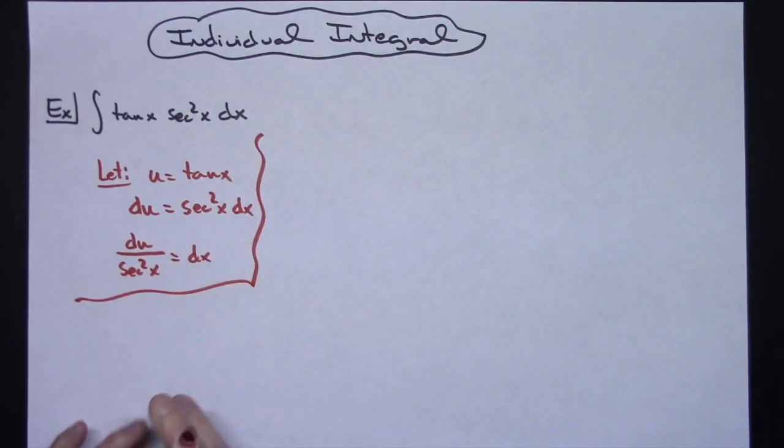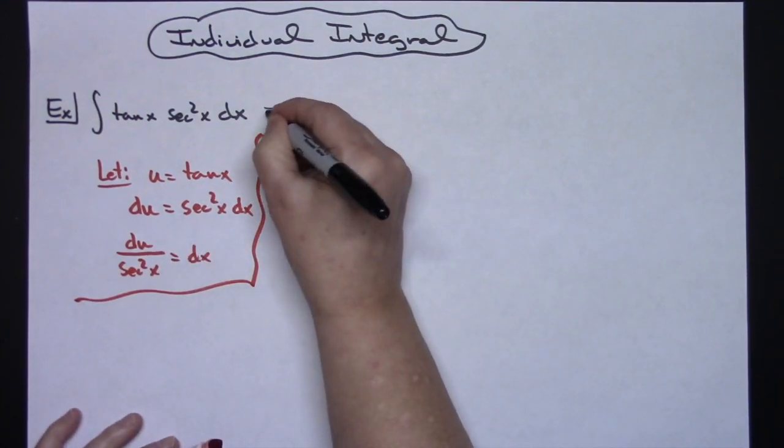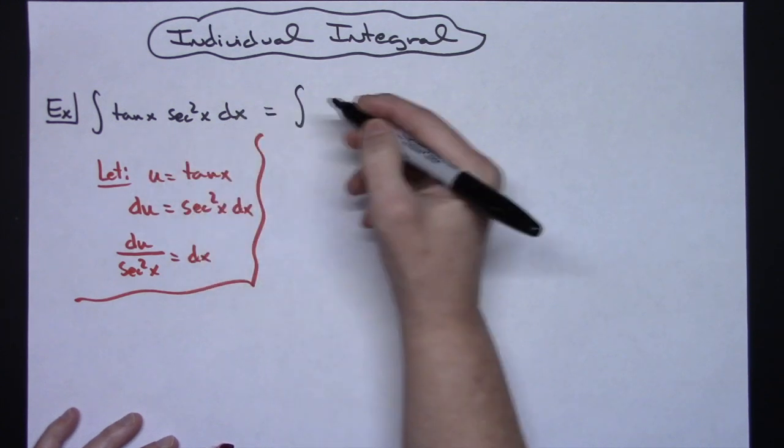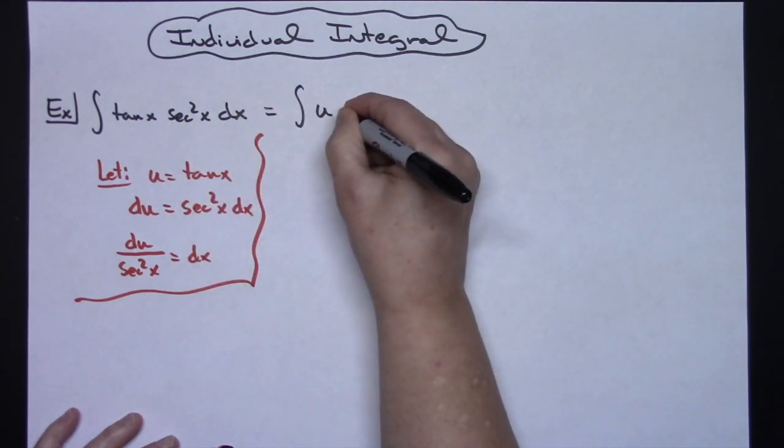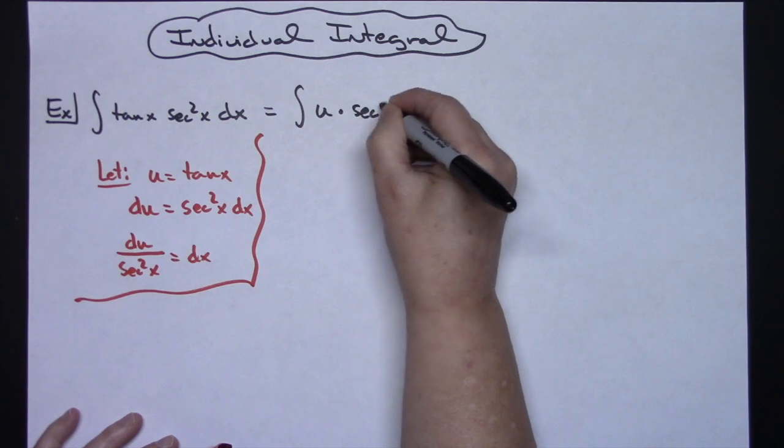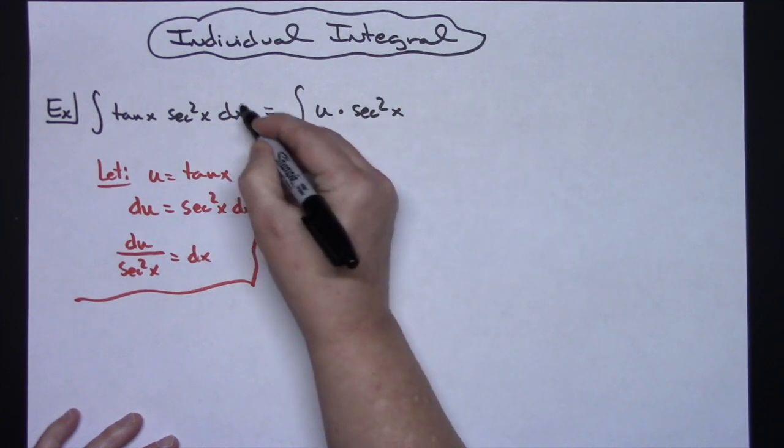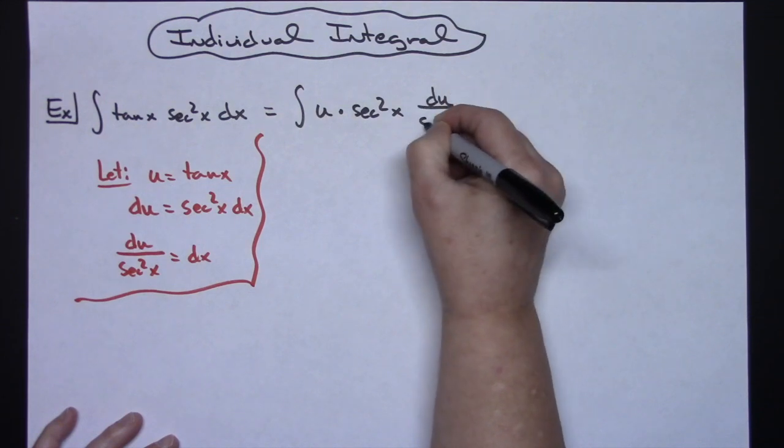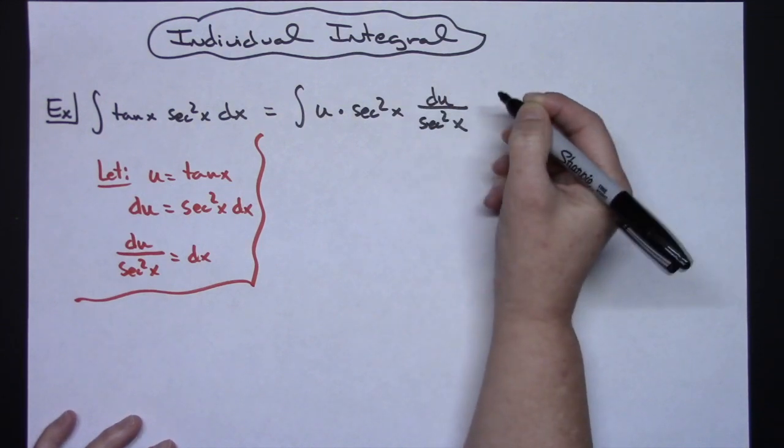Now from there, I'm going to come back up to this original integral and I'm going to start doing some substitutions. Now I let u be tangent x, so I'm going to have a u right there. I'm going to keep the secant squared x. I'm going to replace that dx with what I said it is equal to. So I'll have a du over a secant squared x.